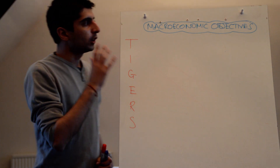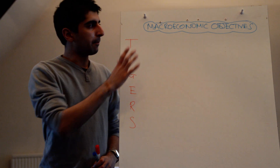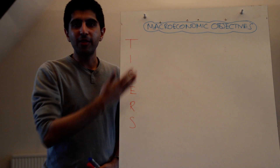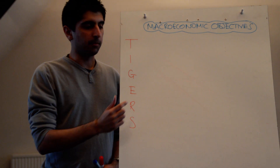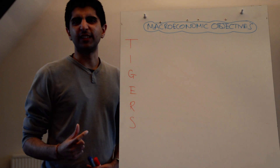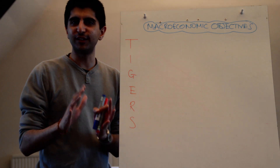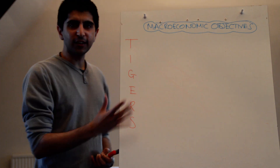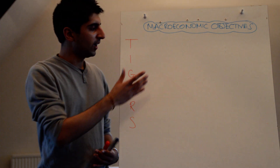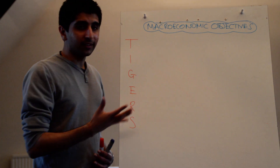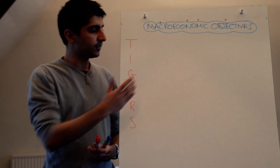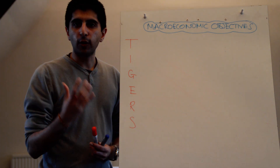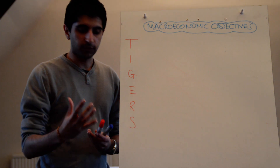The way I like to look at macroeconomic objectives is to remember the acronym TIGERS. It's never going to steer you wrong. Learn TIGERS really well, and when you understand what TIGERS stands for, you'll get to what these macroeconomic objectives are.